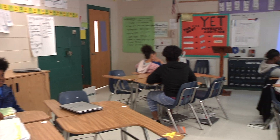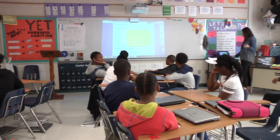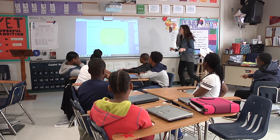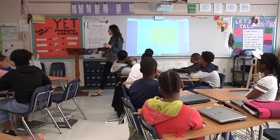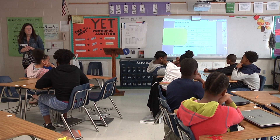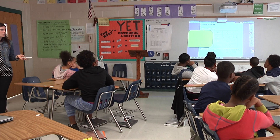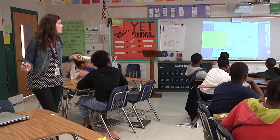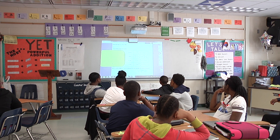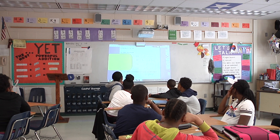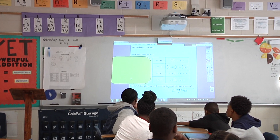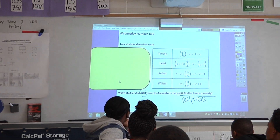Nice job. So we've already uncovered a lot of information about this problem and we haven't even looked at our answer choices yet. So I'm going to move this screen for us, and I want you to discuss with your table partners which of these people did not apply the multiplicative inverse property. We're looking at which person has not multiplied a number by its reciprocal. Take a look at Yancey, Jared, Amber, and William. When you think you have your answer, discuss it with your table partners.